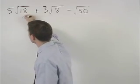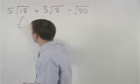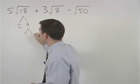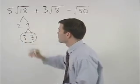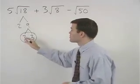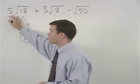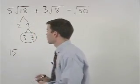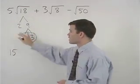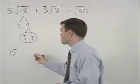18 is 2 times 9, and 9 is 3 times 3. So a 3 will come out of the radical, which multiplies times the 5, and we have a 15 on the outside, and on the inside we're left with the 2 that did not pair up.